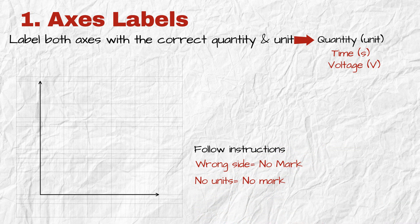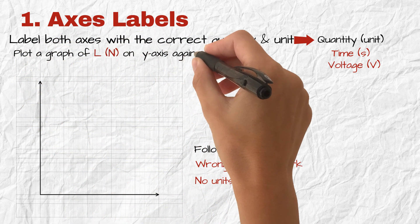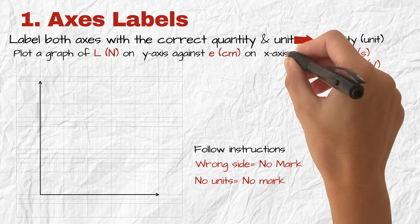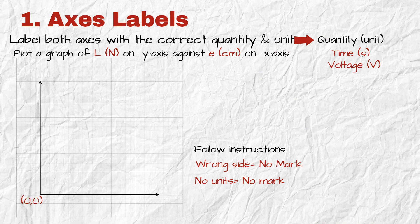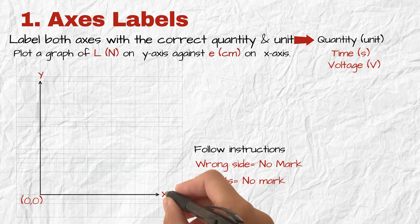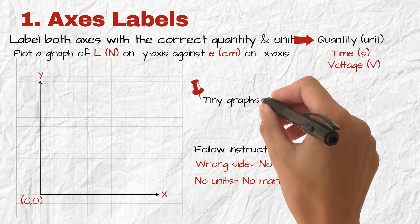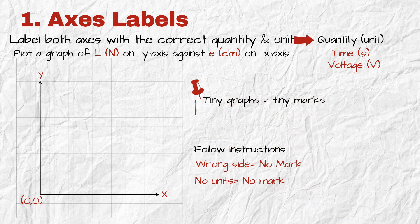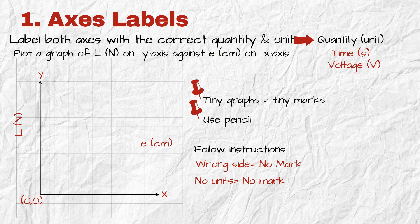Example. He asks you to plot a graph of load in newtons on the y-axis against extension in centimeters on the x-axis. Start both axes at the origin, 0, 0. Draw the best fit line. So on your plotting area, you draw the y-axis upright and the x-axis flat. Draw big, use all the area. Always remember, tiny graphs equals tiny marks. And always use pencil. Then all you do is drop the labels and units. Load in newtons goes on the y-axis. Extension in centimeters goes on the x-axis. That's it. First mark done.